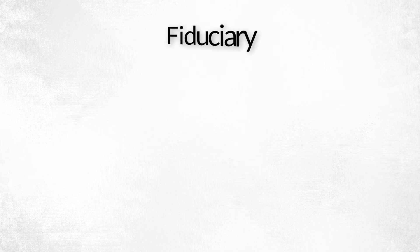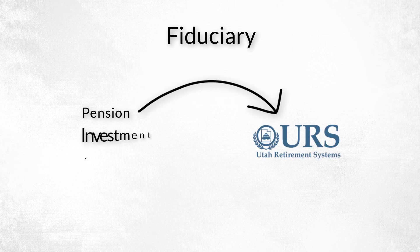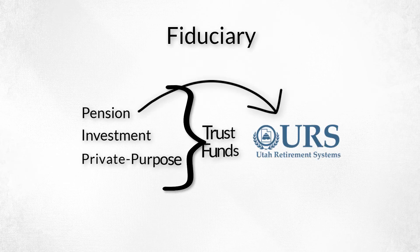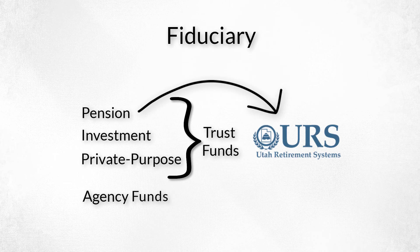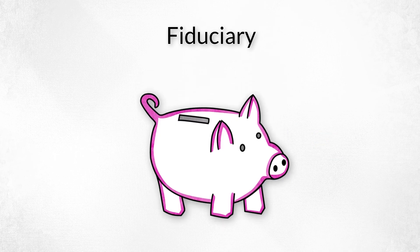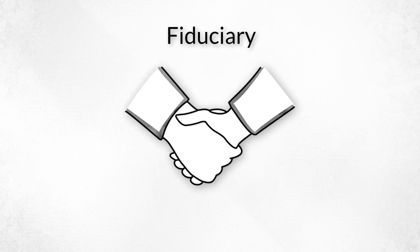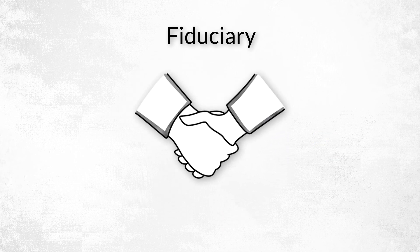Third is fiduciary, which includes four categories: pension, investment, and private purpose trust funds, and agency funds. These funds are for money you're holding on behalf of other governments or organizations.